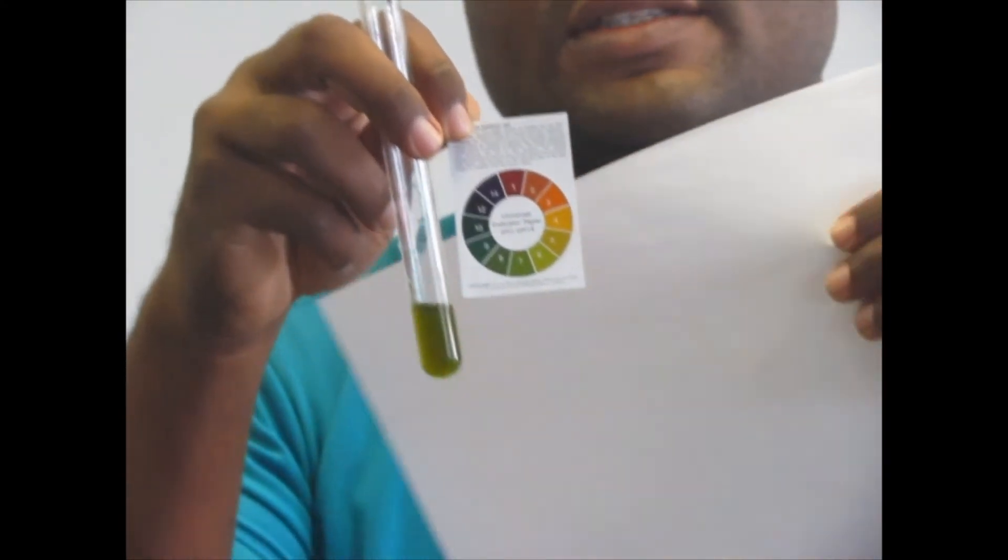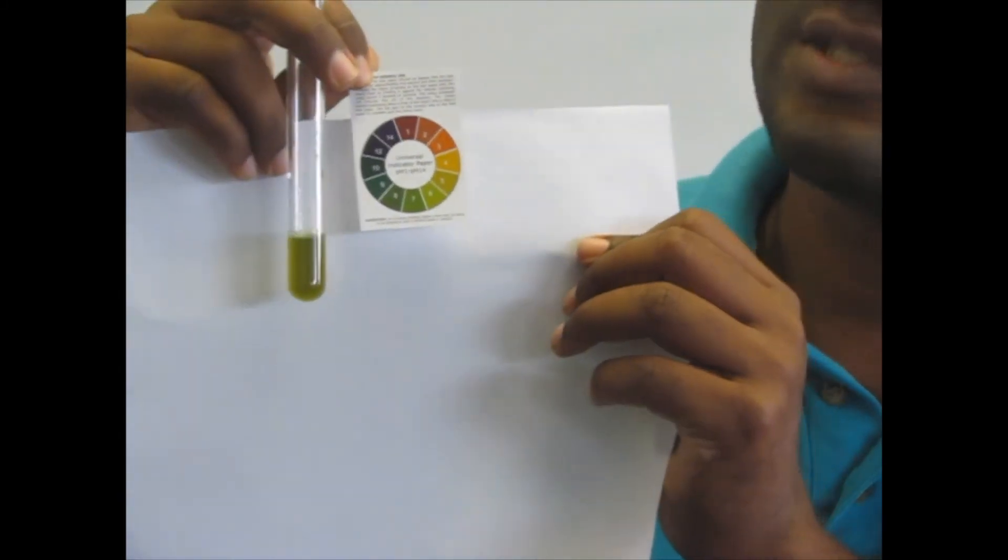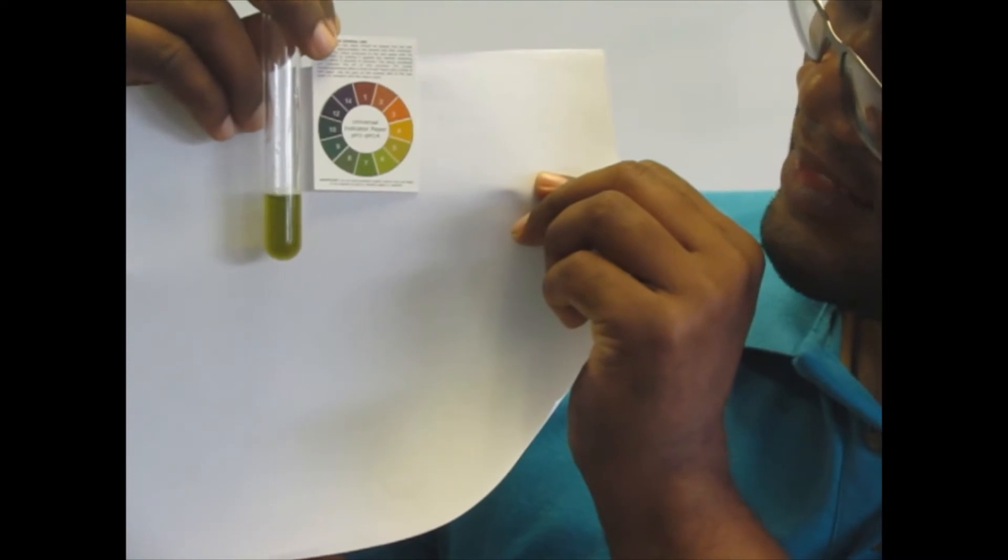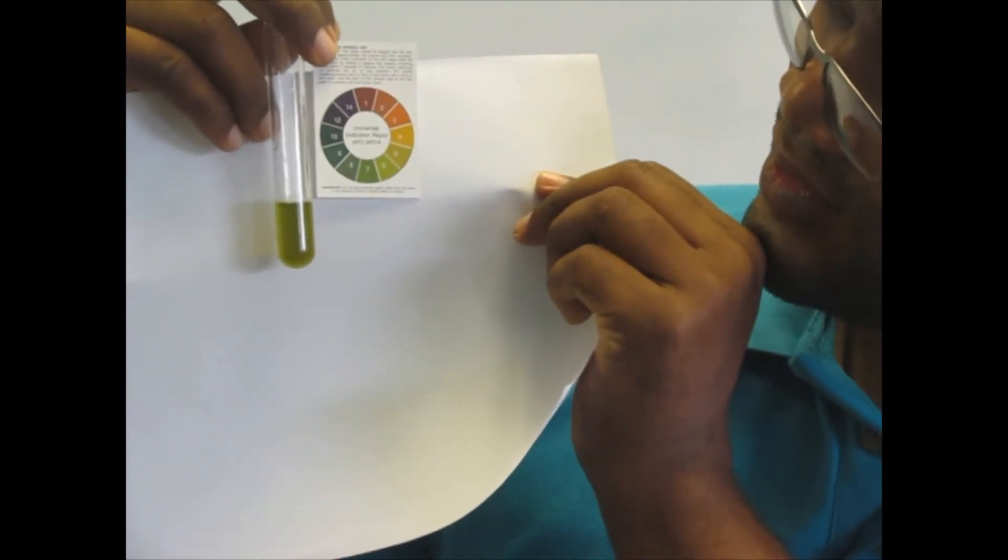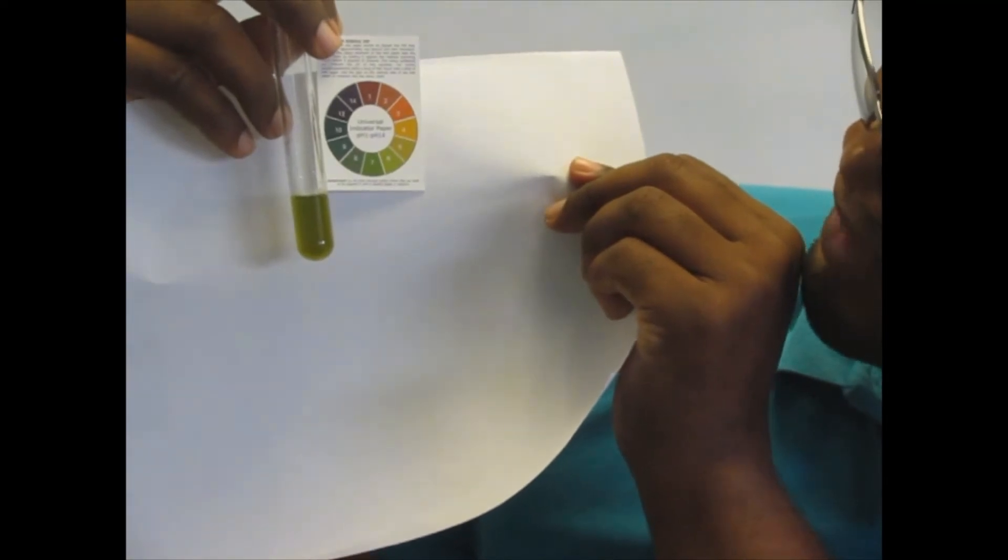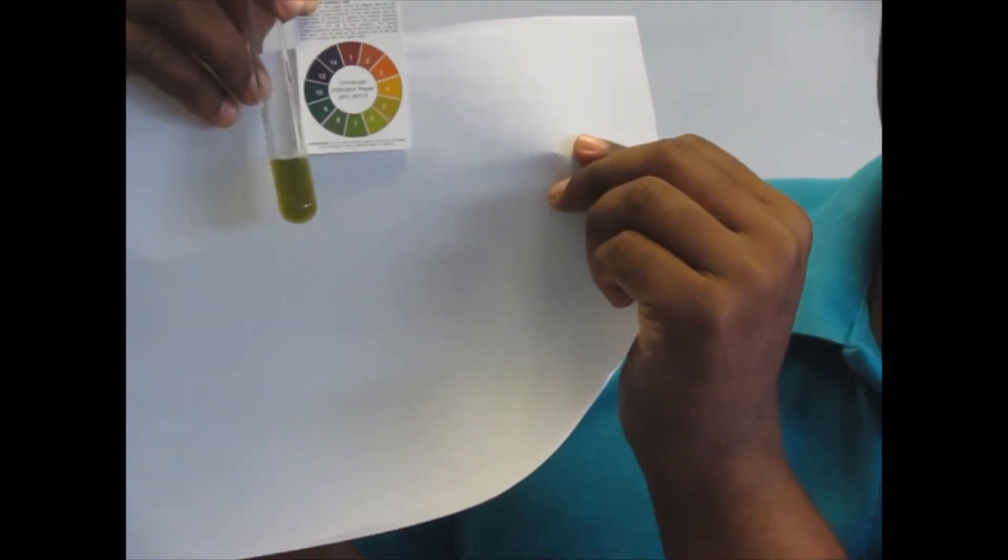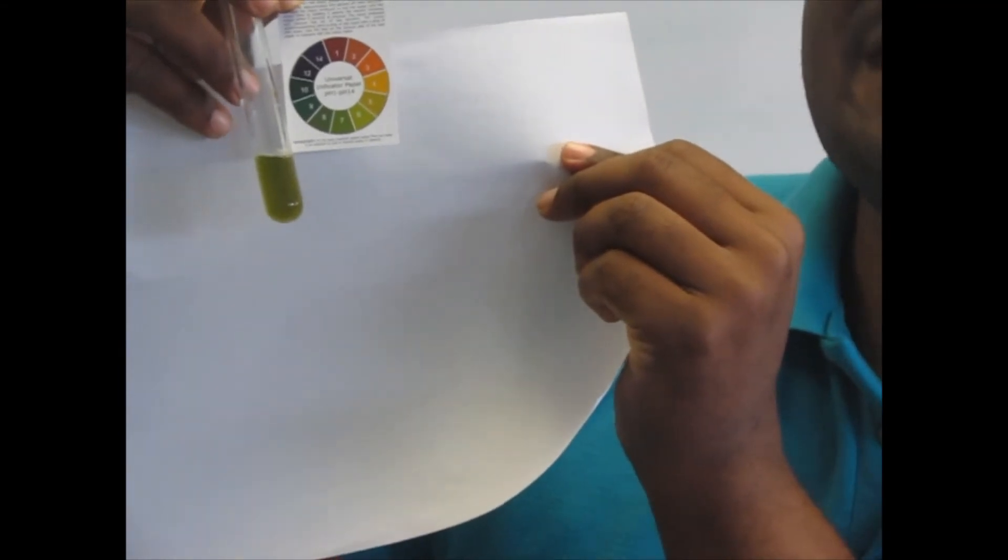What you can do to do this is put up white paper behind the test tube, so that we can more clearly see the color. So this one is about pH 5 or between pH 5 and pH 6. This will be a slightly acidic soil.